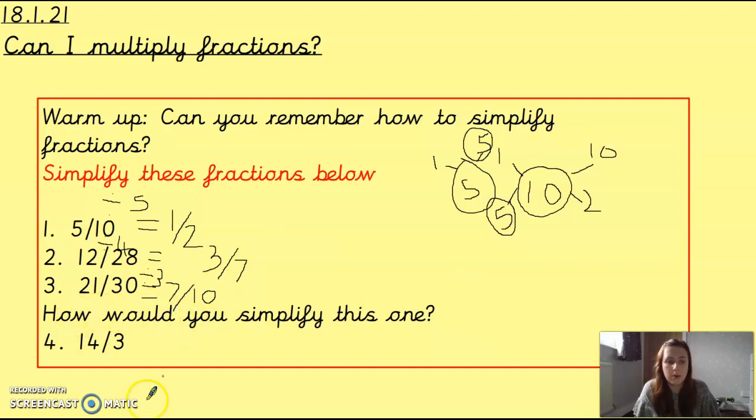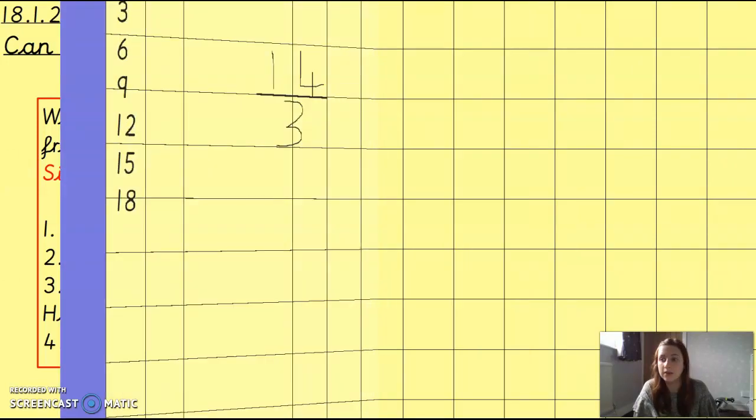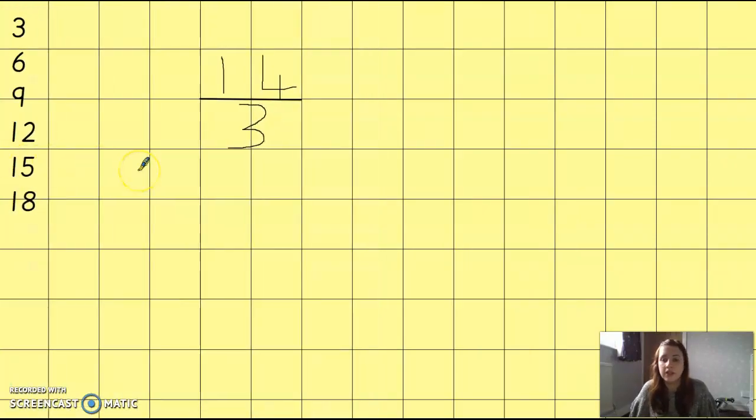Now, the last question on the bottom is slightly different because this fits into our work we were doing at the end of last week of our mixed fractions. You would have had to have worked this one out a little differently. And to do this, we need to know our 3 times table. If you think back to last week, this fraction, when the top half of your fraction is bigger than the bottom half, is called an improper fraction because it doesn't quite work out because the top is bigger. And to simplify this, we have to turn it into a mixed number.